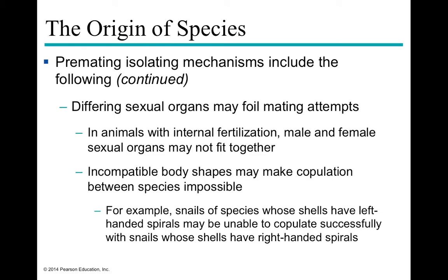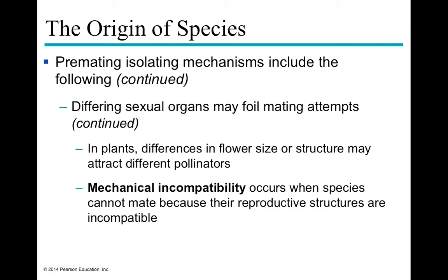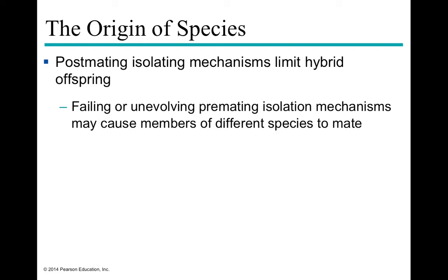Another pre-mating isolating mechanism involves incompatible sexual organs — for example, a bulldog and a chihuahua, where the organs simply never line up. Animals with internal fertilization may have male and female organs that simply don't fit together, so copulation cannot occur. We can also have incompatible body shapes. A very specific example is certain snails whose shells have either a left-handed or right-handed spiral — those with a left-handed spiral cannot copulate successfully with those of the opposite spiral, a type of mechanical incompatibility.